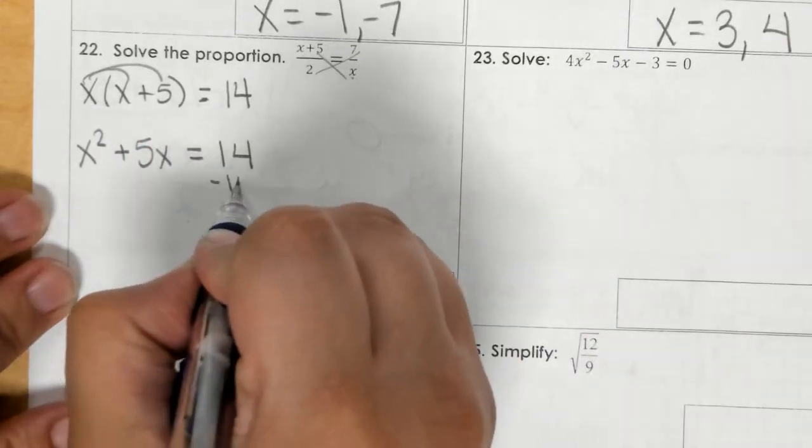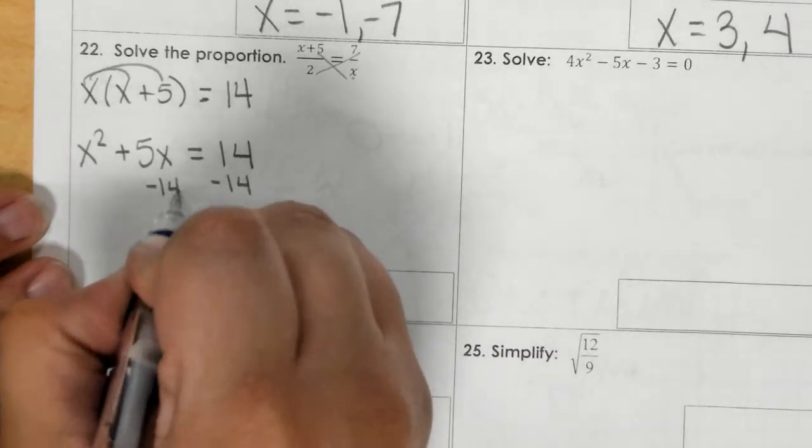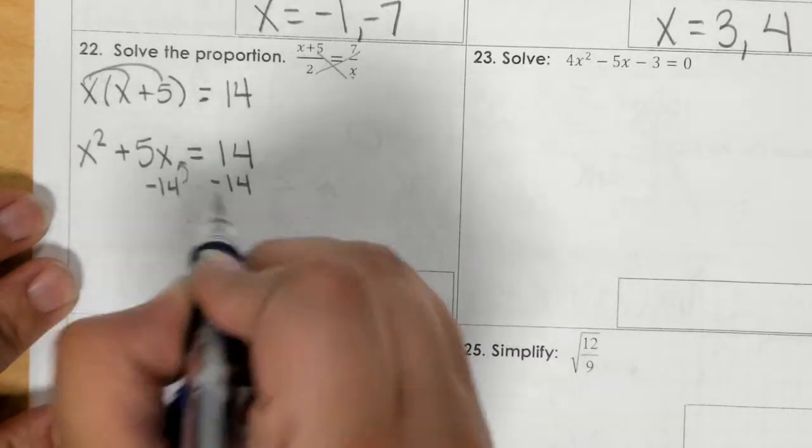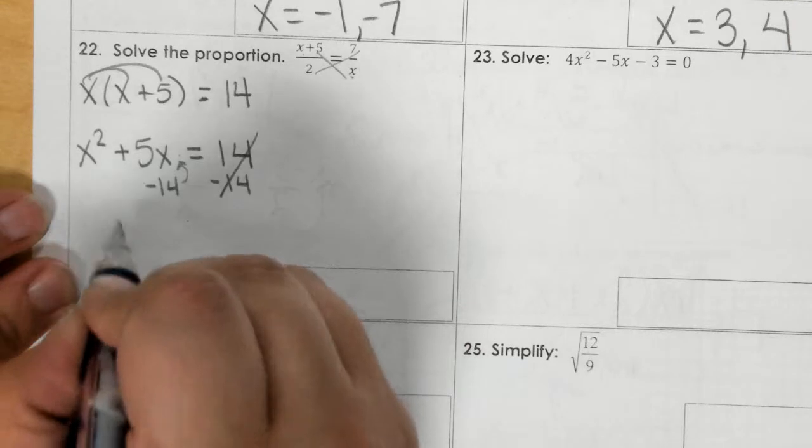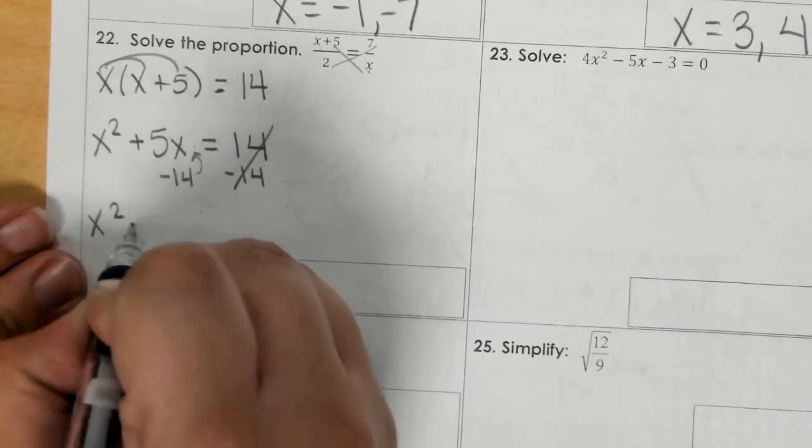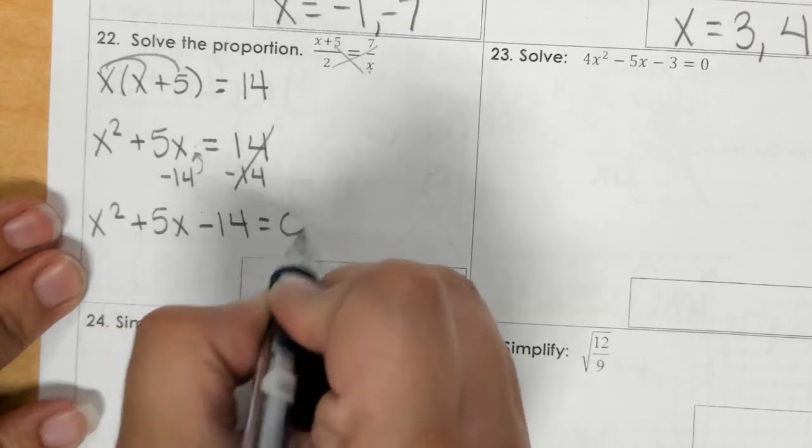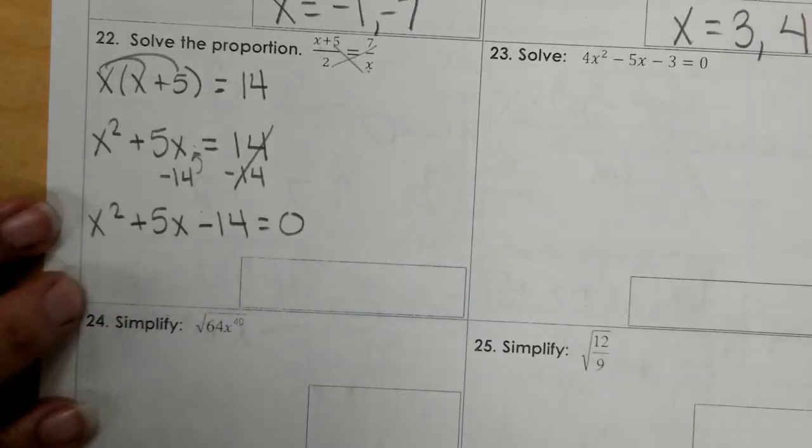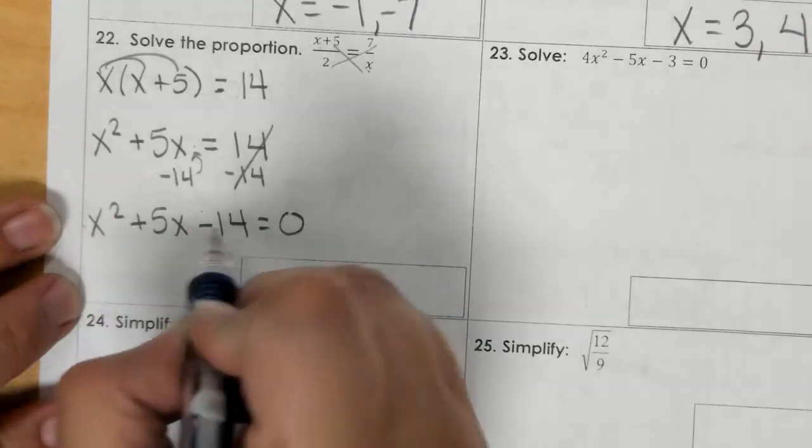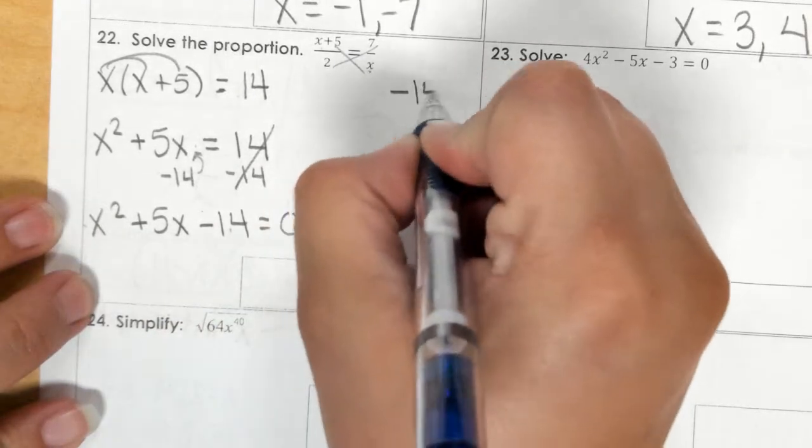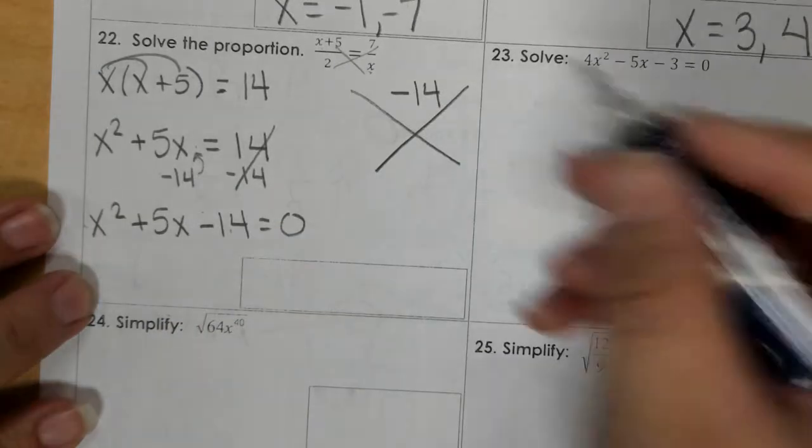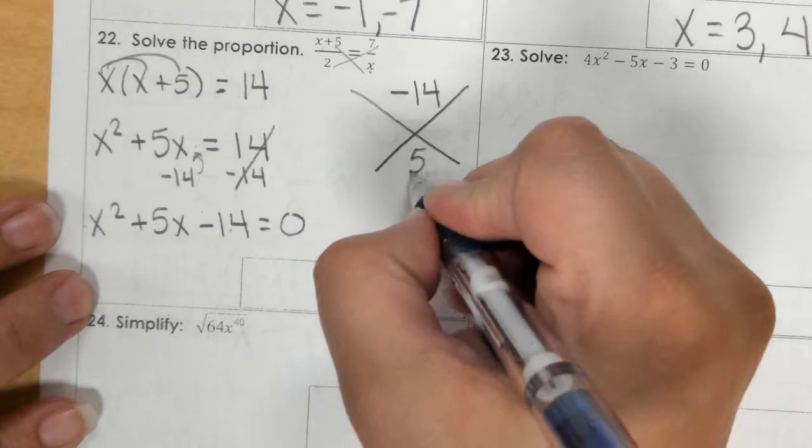We subtract the 14, but know that you're putting it right here. So I have x squared plus 5x minus 14 equals 0. So 1 times negative 14 is negative 14. As you can see, we're going to factor. We've got to get to 5.